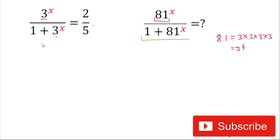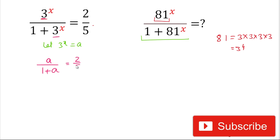To simplify the equation, we let 3 to the power x equal to a. Therefore our new equation will be: in place of 3 to the power x we write a, divided by 1 plus a (since 3 to the power x is again a), equal to 2 divided by 5.